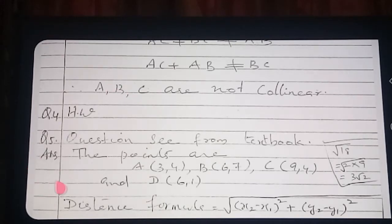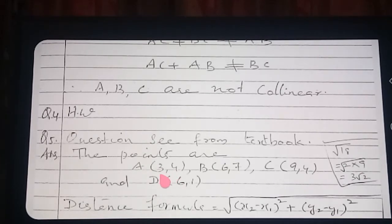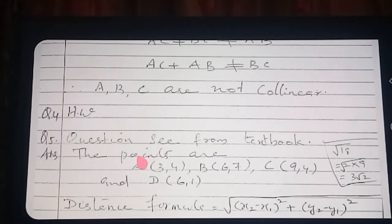Here I will read question 5. Four friends are seated at points A, B, C, D as shown in figure 7.8. Chamba and Chameli walk into the class, and after observing for a few minutes, Chamba asks Chameli: 'Don't you think ABCD is a square?' Chameli disagrees. You want to find out using the distance formula which of them is correct.